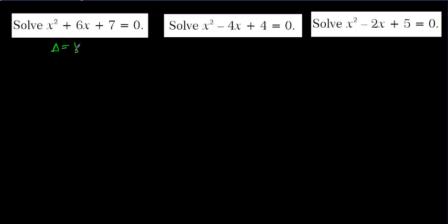Now we have three different questions, and we are going to analyze the delta and understand what kind of roots each equation has. Delta is equal to b squared minus 4ac.